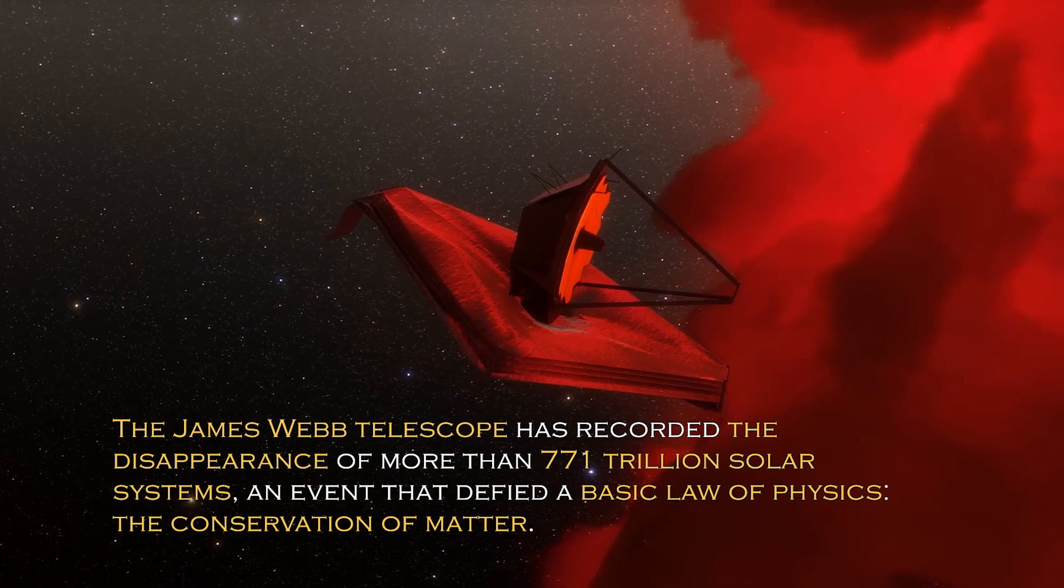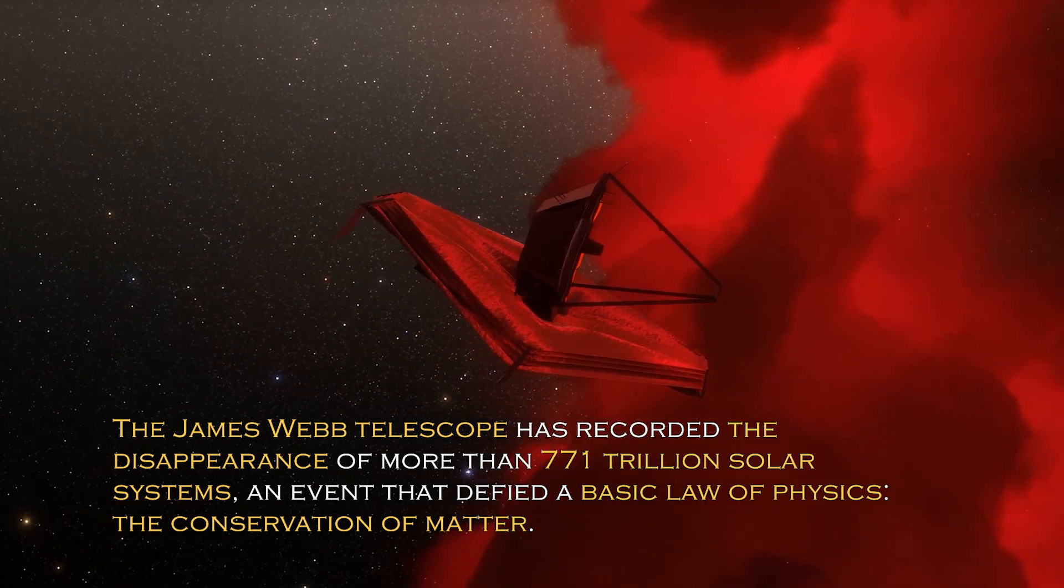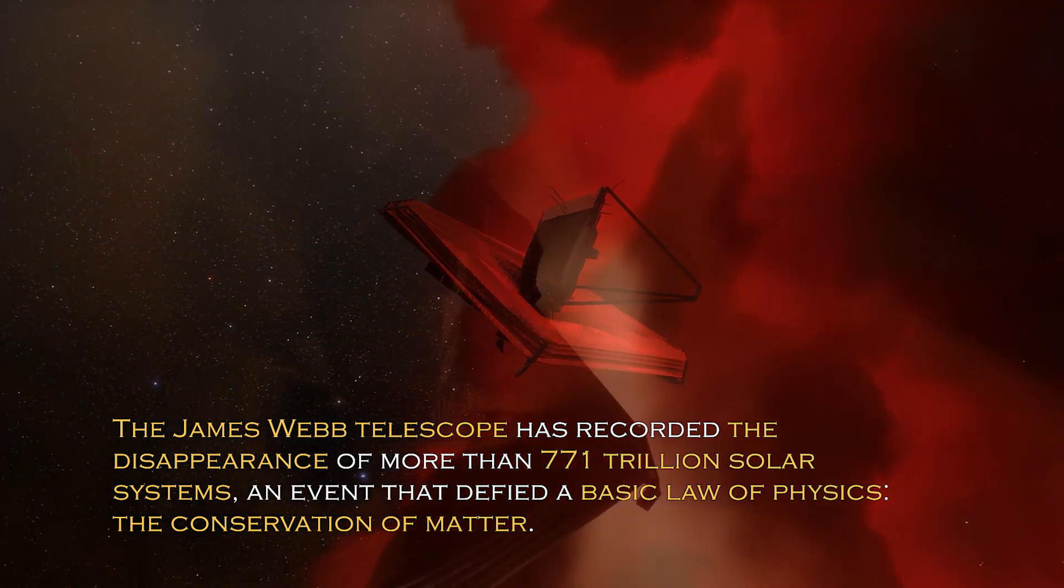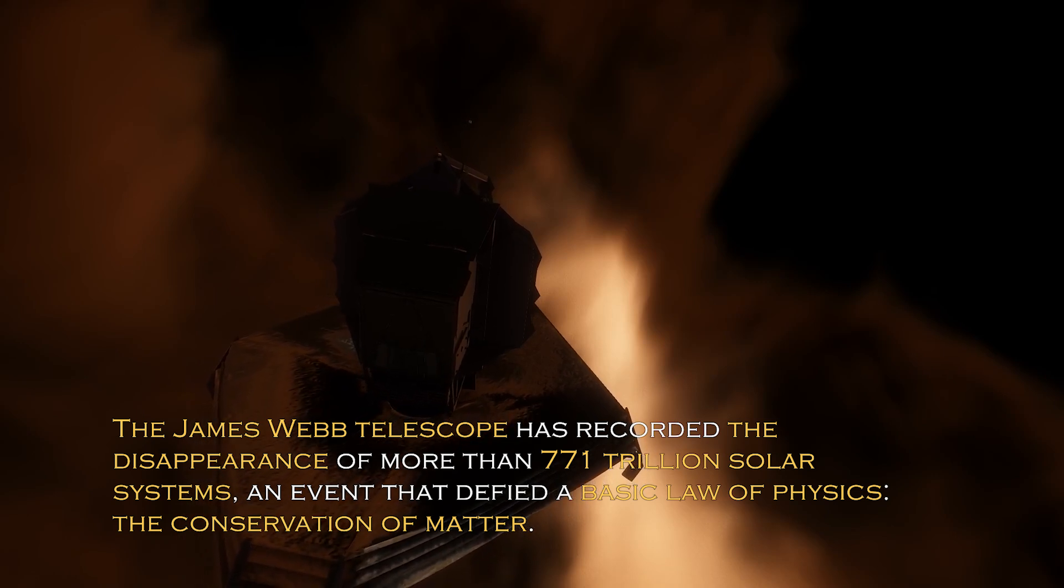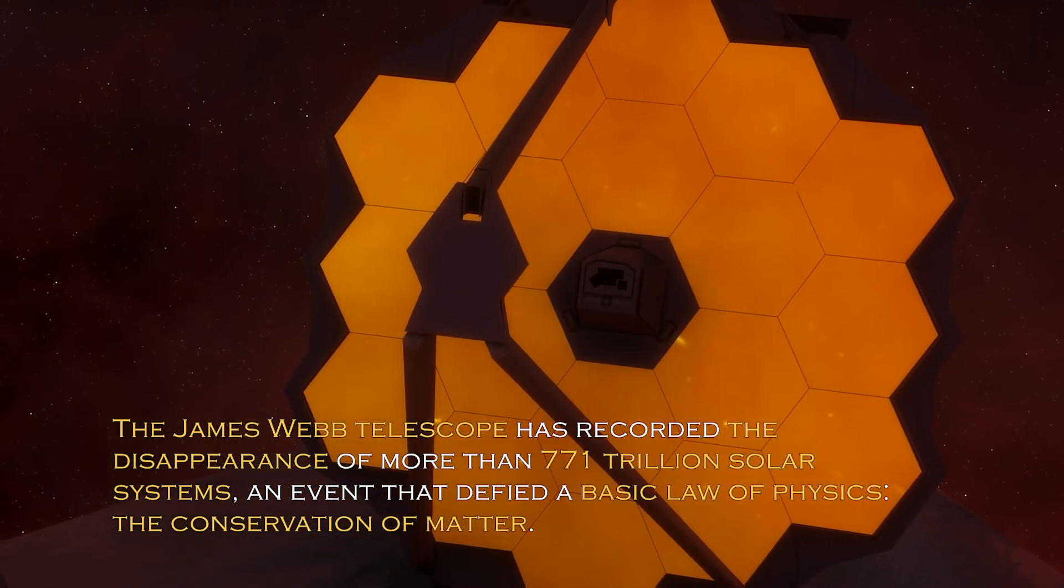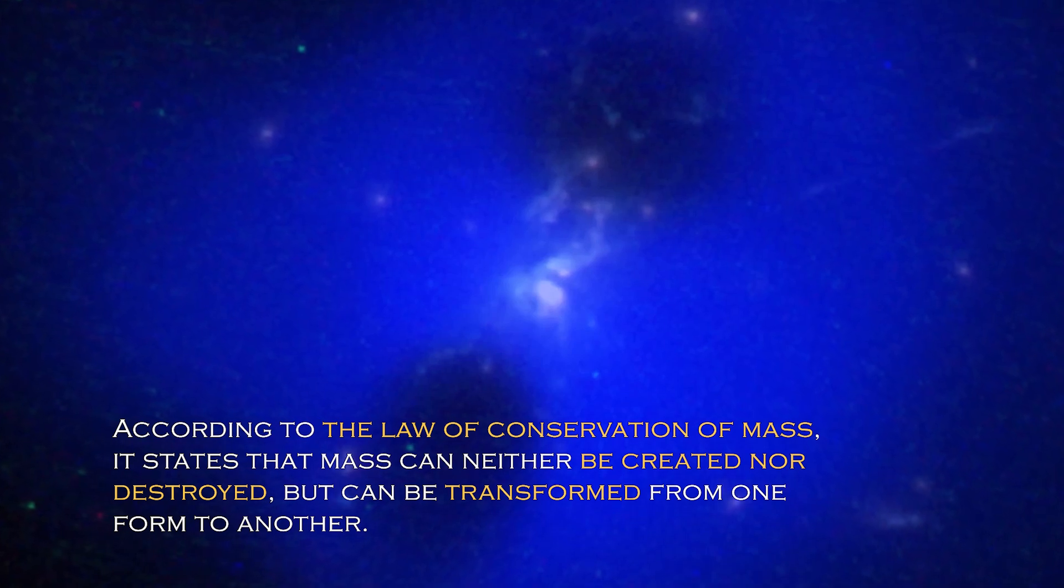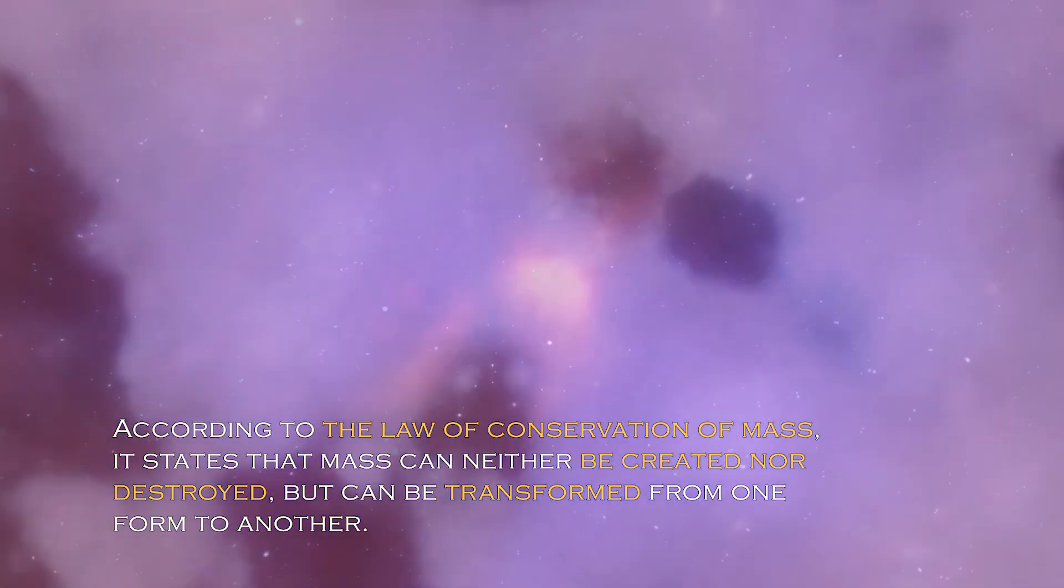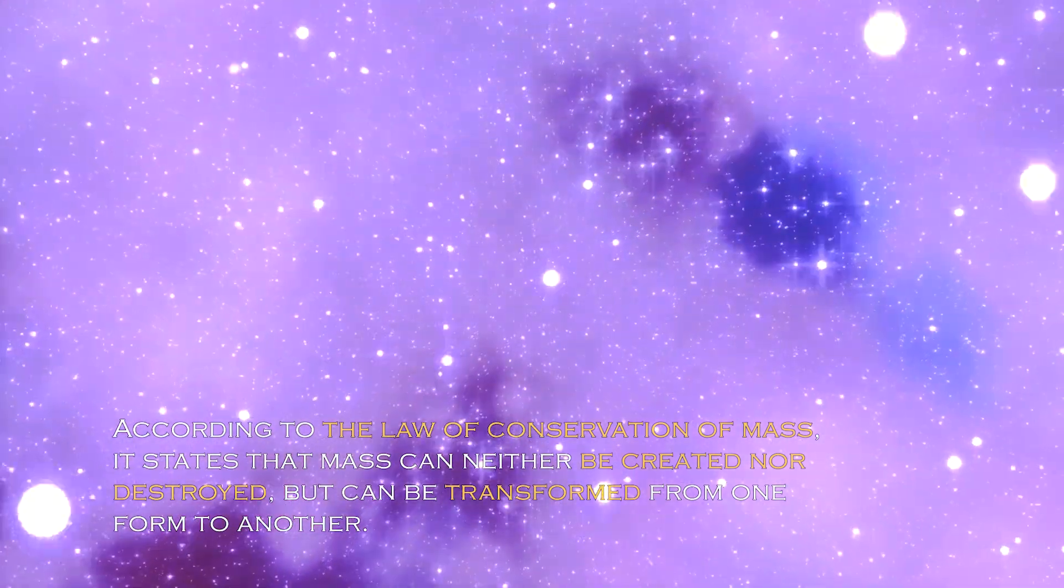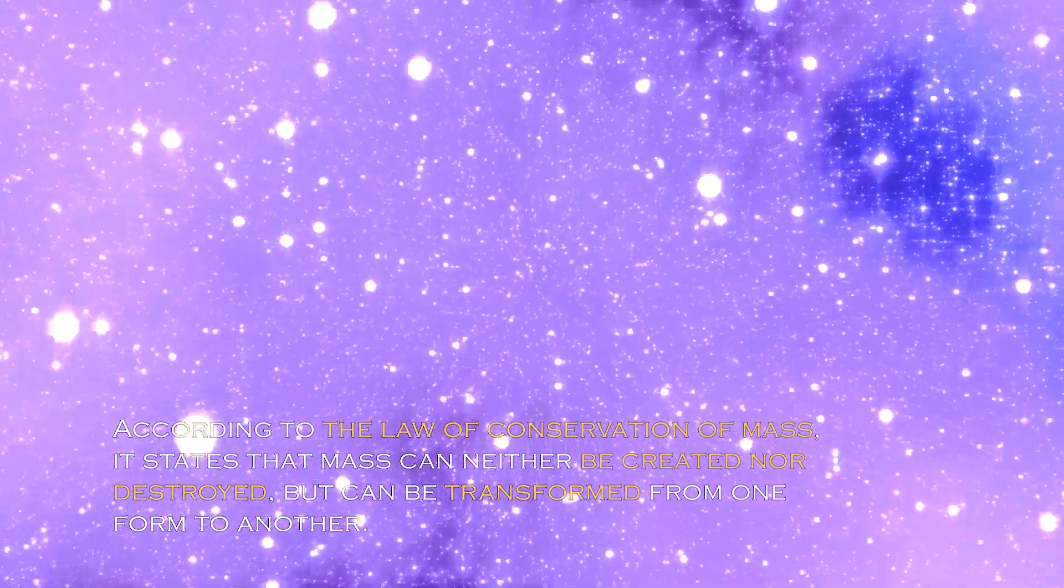The James Webb telescope has recorded the disappearance of more than 771 trillion solar systems, an event that defied a basic law of physics, the conservation of matter. According to the law of conservation of mass, it states that mass can neither be created nor destroyed, but can be transformed from one form to another.